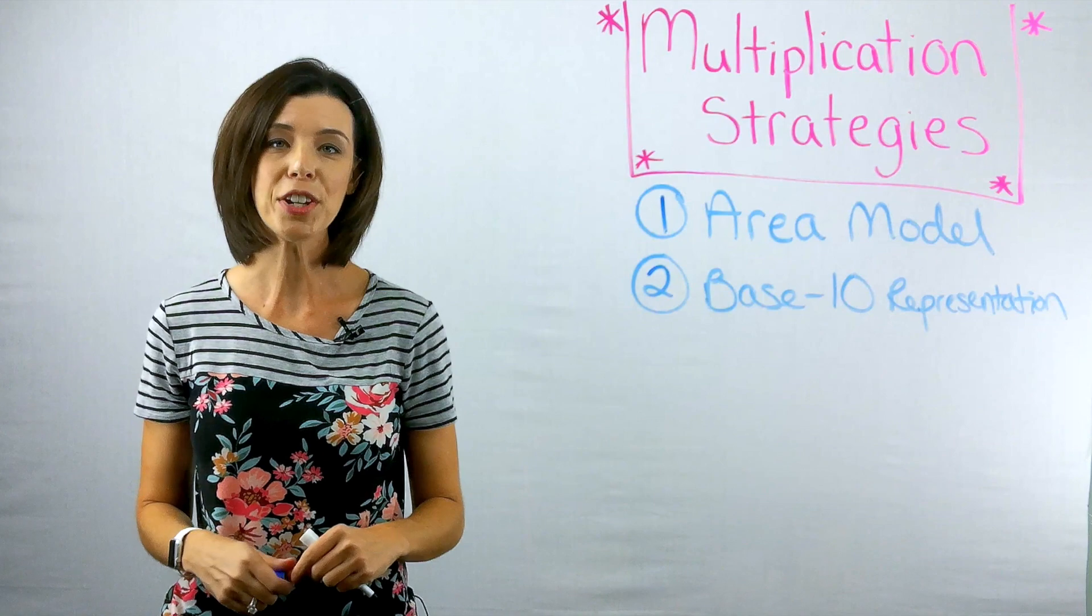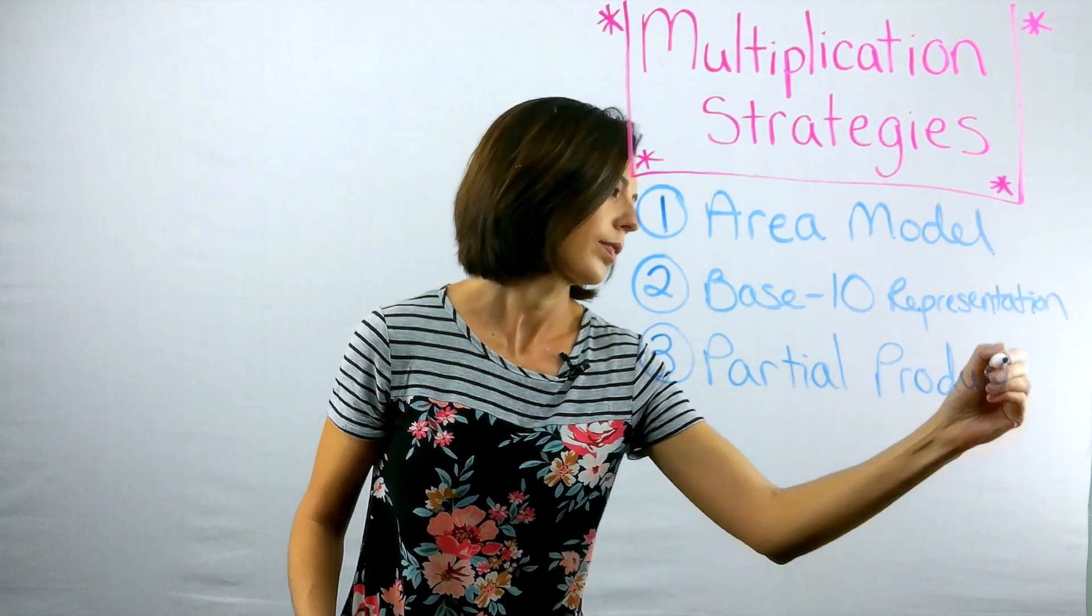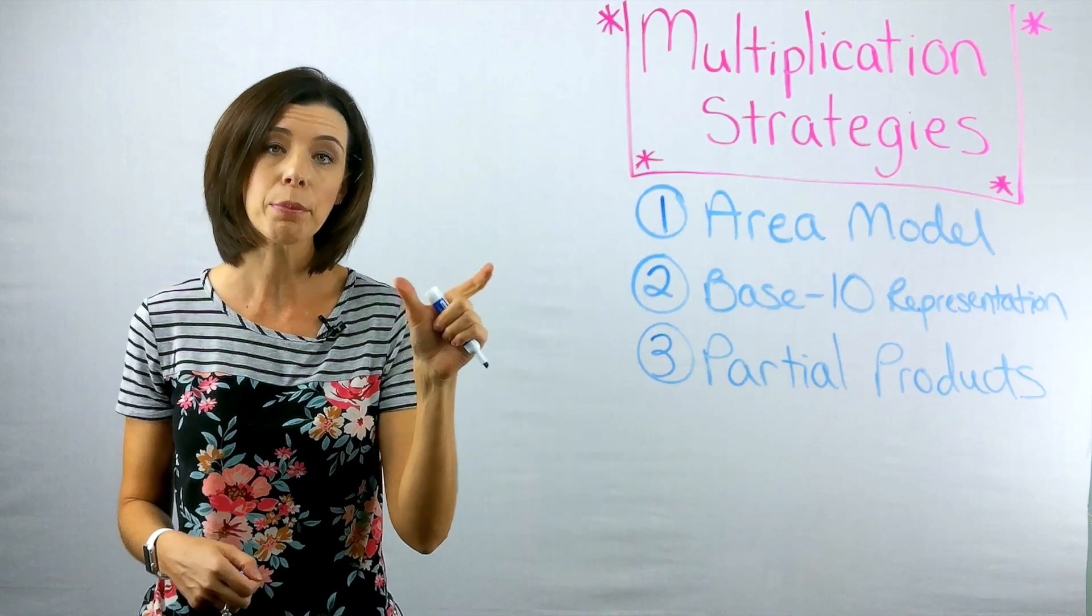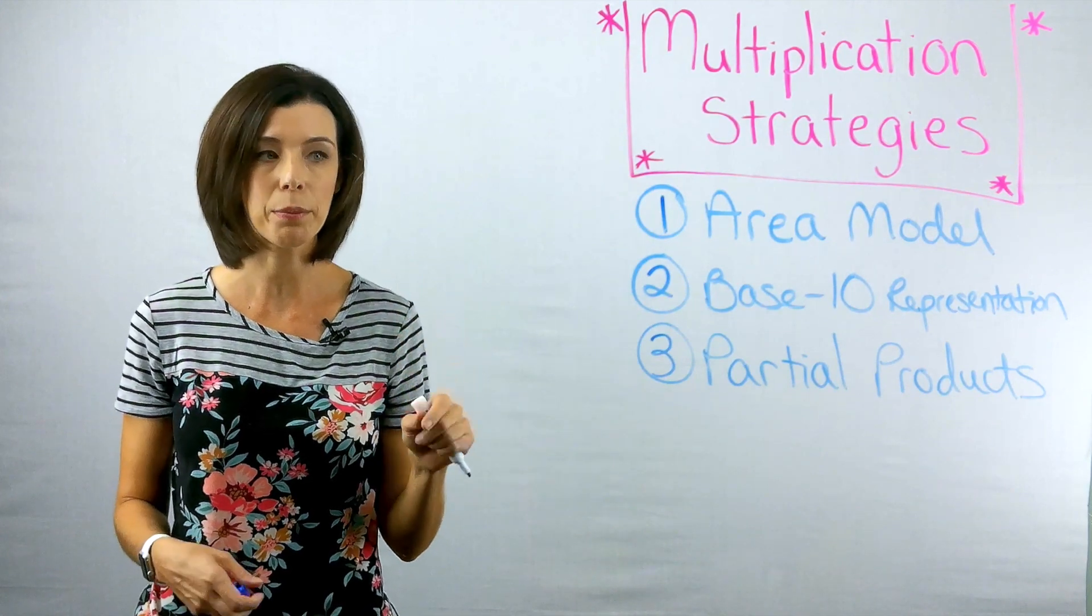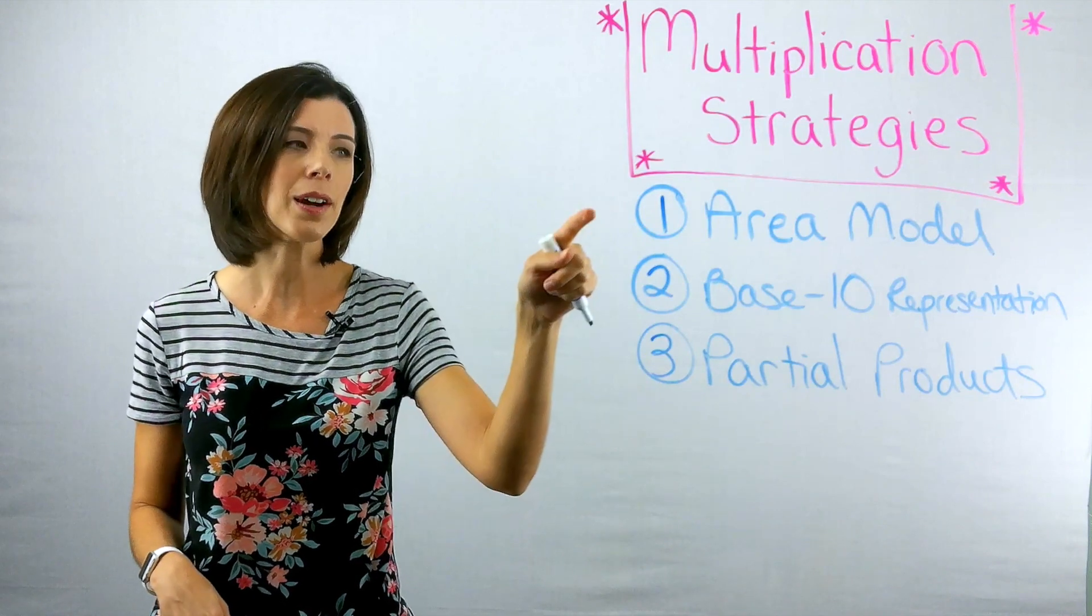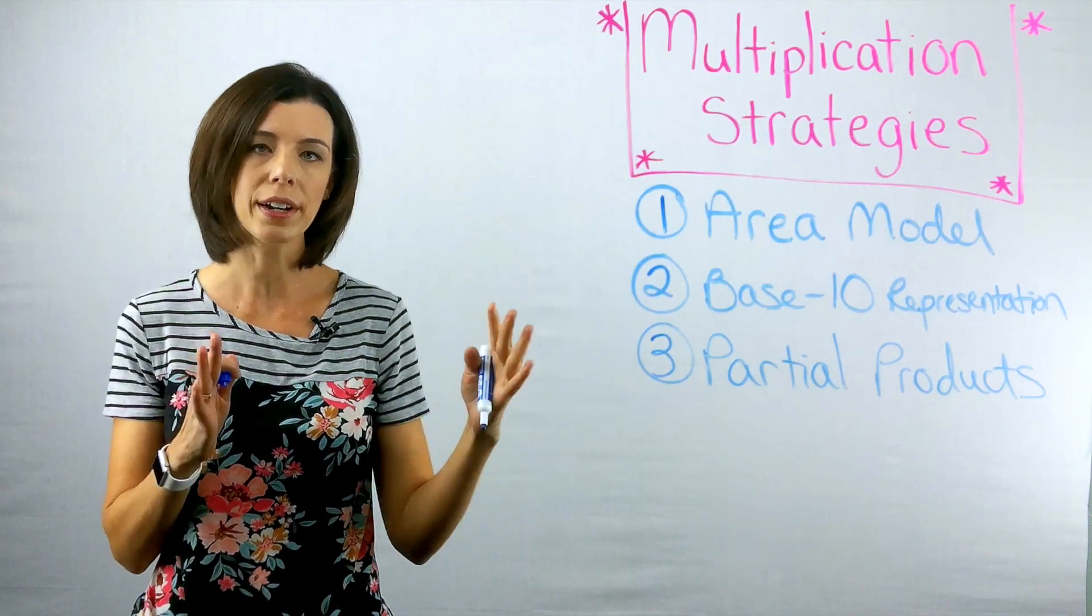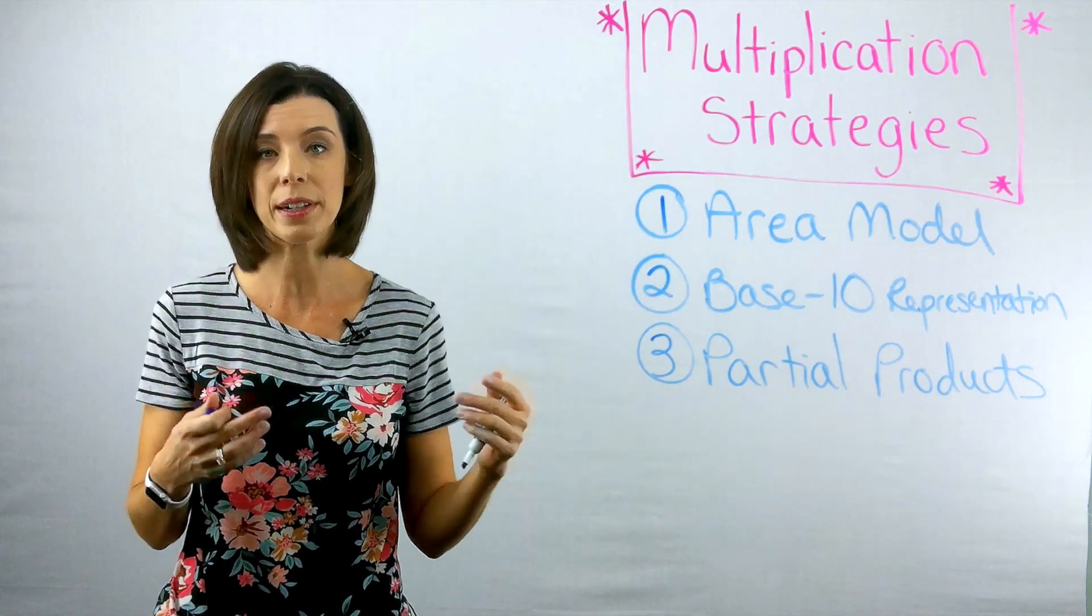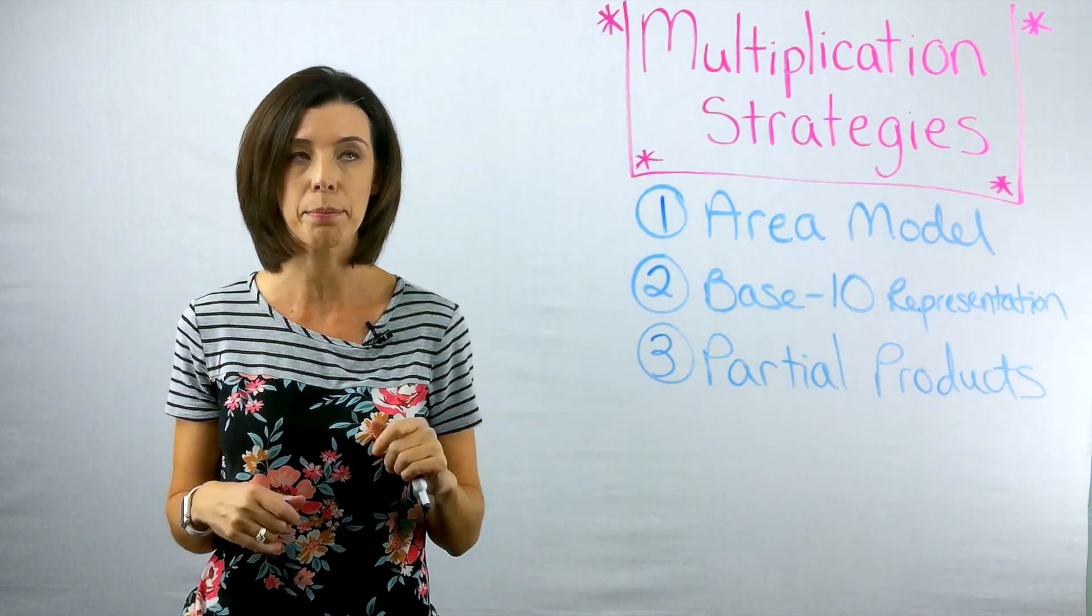The next strategy I'm going to show you is partial products. Partial products is really good when you have a multi digit number times a single number, although you can use it for anything. You'll notice that it's similar to the area model, except for the area model, we're really drawing our rectangles. And the partial products, we're assuming you can kind of see those rectangles in your head. So let me give you an example.